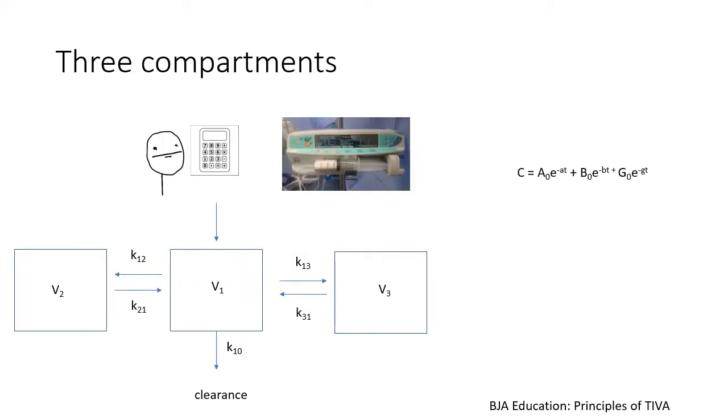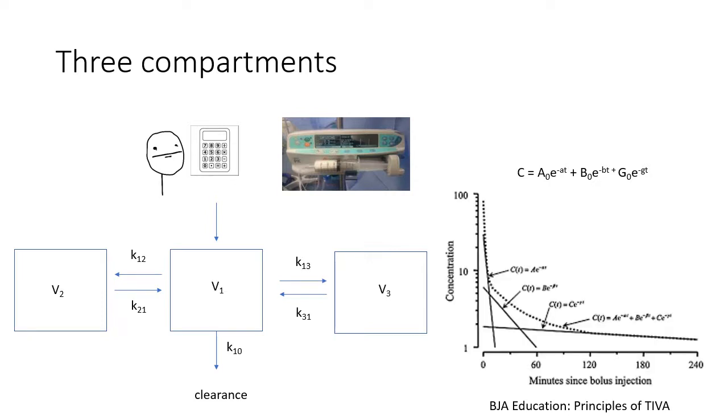Here is a three compartment model, with a central compartment V1, a vessel-rich compartment V2, and a vessel-poor peripheral compartment V3. Note that vessel-rich does not necessarily mean muscle, and vessel-poor does not necessarily mean fat. Note that the exponential decay curve that corresponds to this model is represented as the tri-exponential decay curve, and the y-axis is usually log transformed so that each of the individual components of that graph can be represented as a straight line.